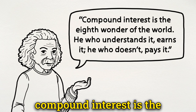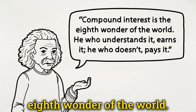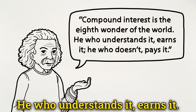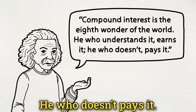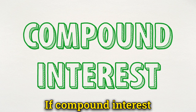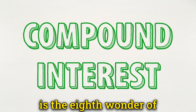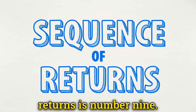As Einstein once said, compound interest is the eighth wonder of the world — he who understands it earns it, he who doesn't pays it. If compound interest is the eighth wonder of the world, sequence of returns is number nine.